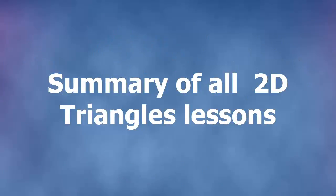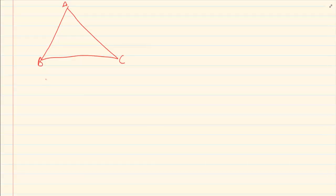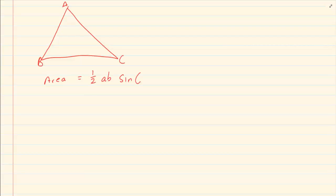Hi and welcome to my maths class. Today we are going to do a summary on 2D triangles. Now before we continue, you need to know the three basic rules. The three basic rules are the sin rule, the cos rule, and the area rule. The area rule states that half AB sin C gives us the area of a triangle.